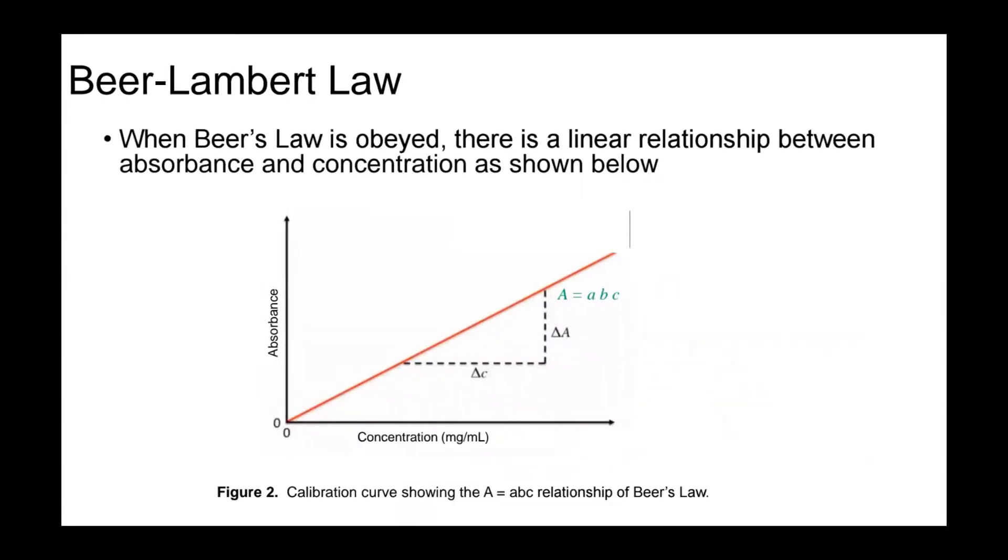When the Beer-Lambert Law is obeyed, there is a linear relationship between the absorbance and the concentration as shown below. We have the absorbance on the y-axis and the concentration on the x-axis. Looking at the equation A equals εbC, absorbance is the y-axis and the concentration is the x-axis. So, absorptivity will be our slope, and b is the path length which equals one centimeter.